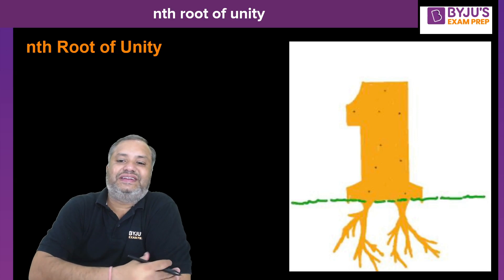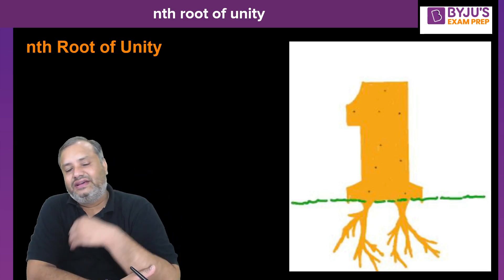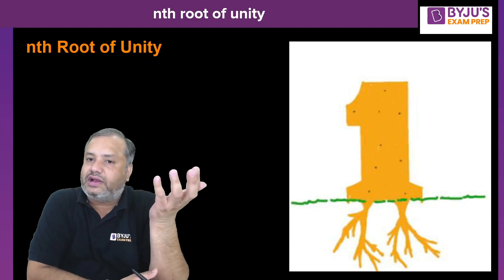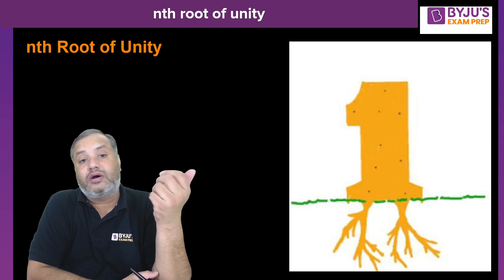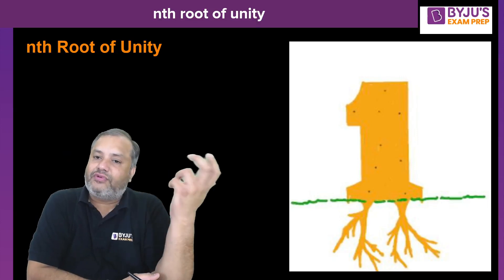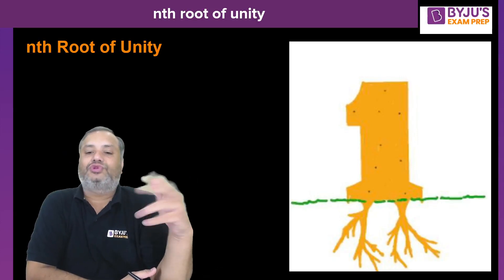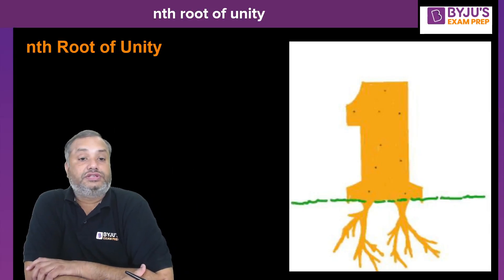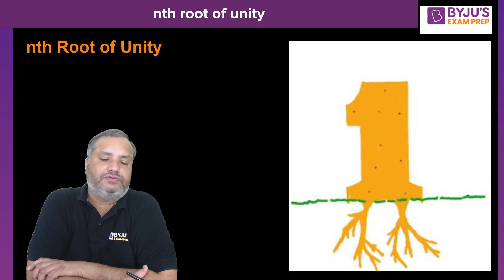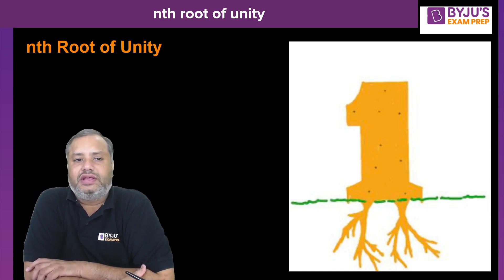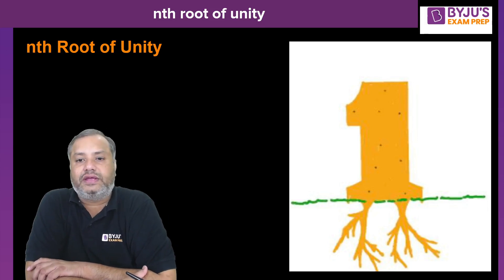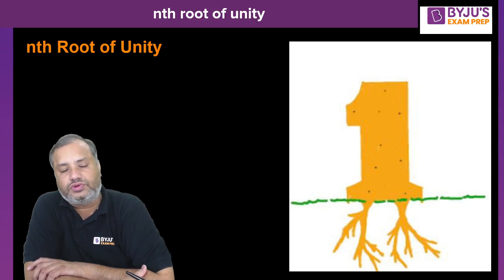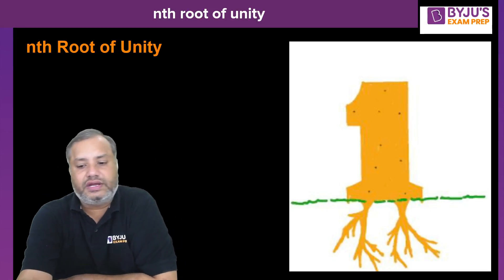It is a general perception among students that when we square one we get one, when we cube one we get one. So students think that the square root of one is one, cube root of one is one, fourth root of one is one — but that is not the case. When you take the square root of one you have two values: plus one and minus one. Similarly, when you take the cube root of one you get one real root and two complex roots.